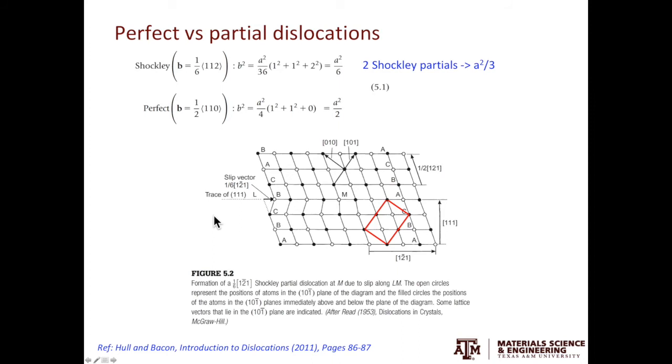For the partial dislocation, the Burgers vector is 1 over 6, 112. So b squared is a squared over 6. Since we have two partial dislocations, then the total energy is a squared over 3.